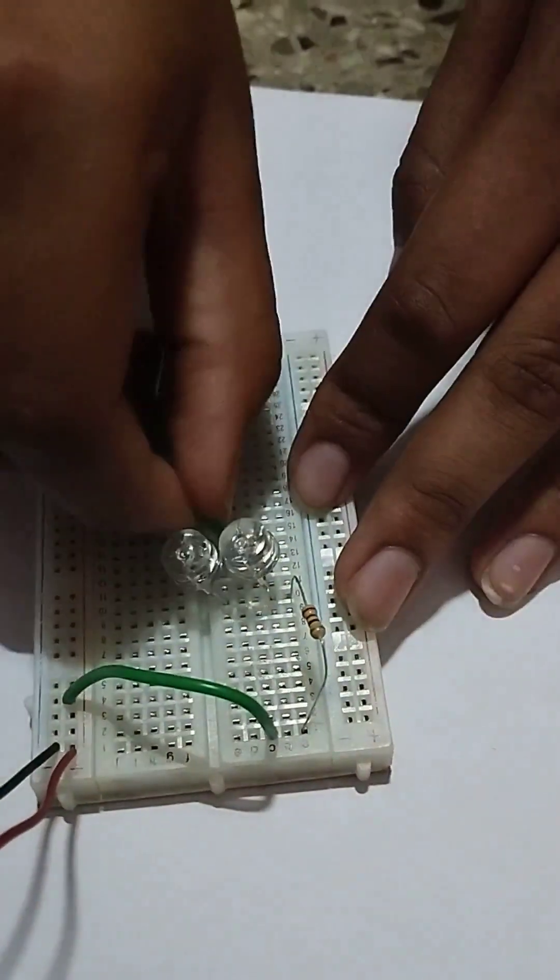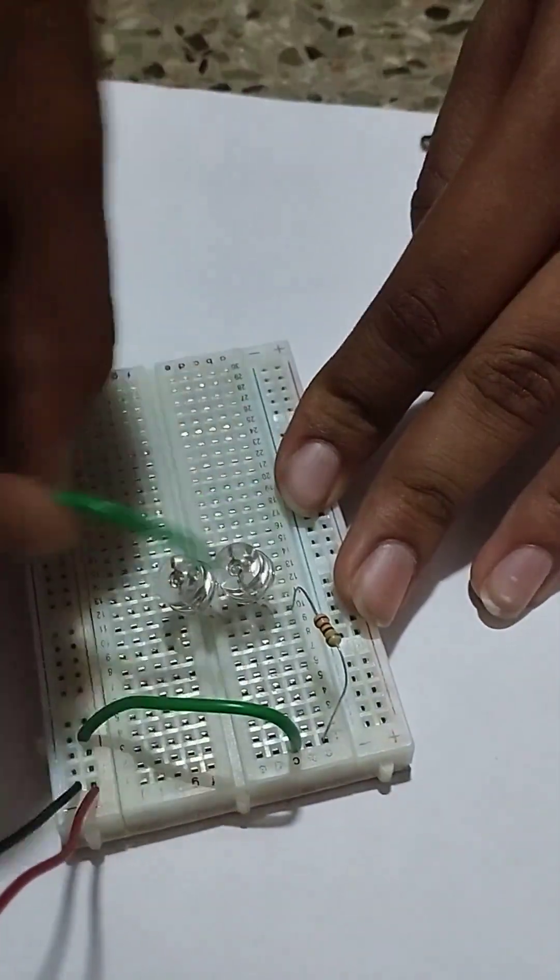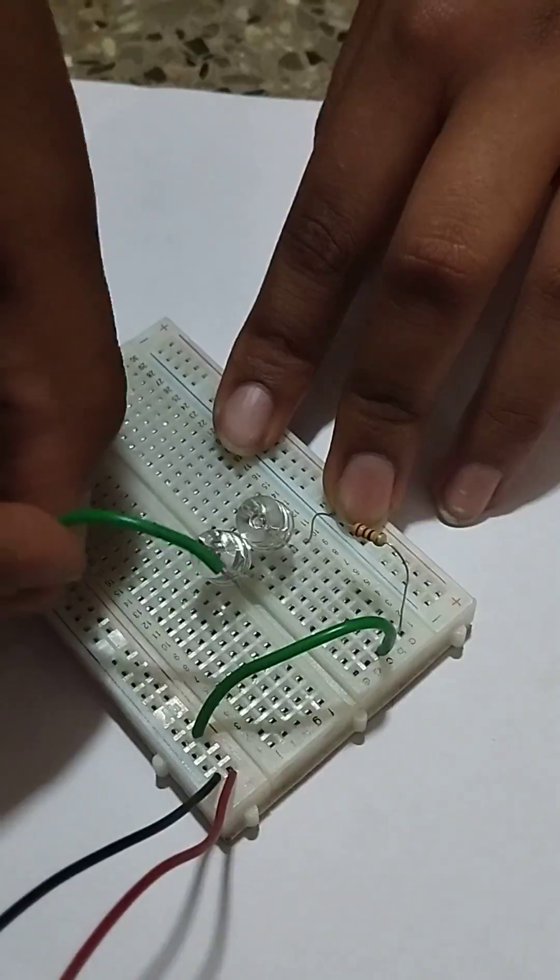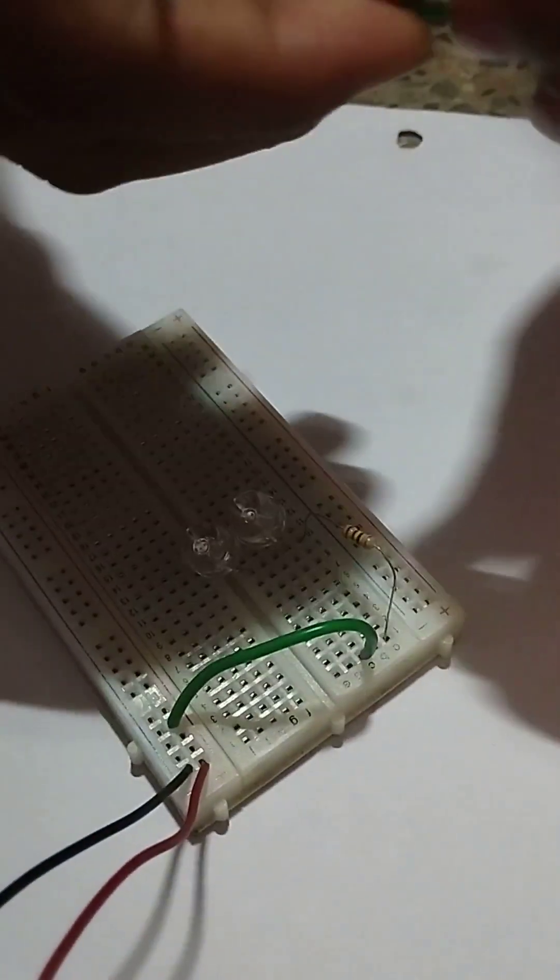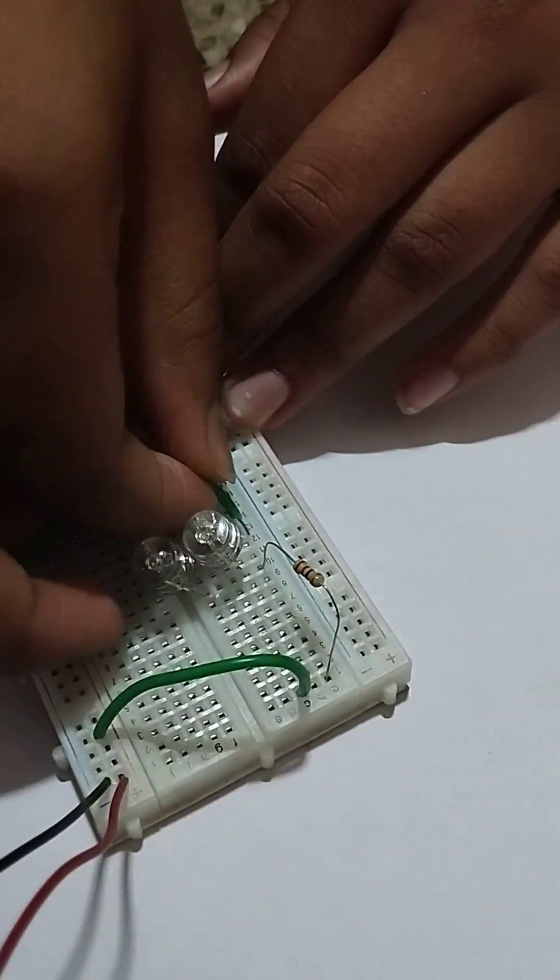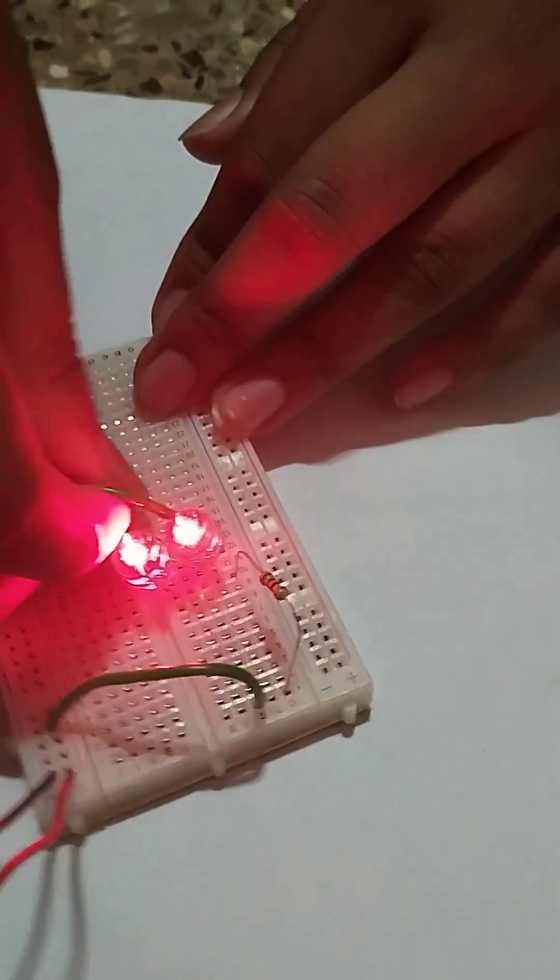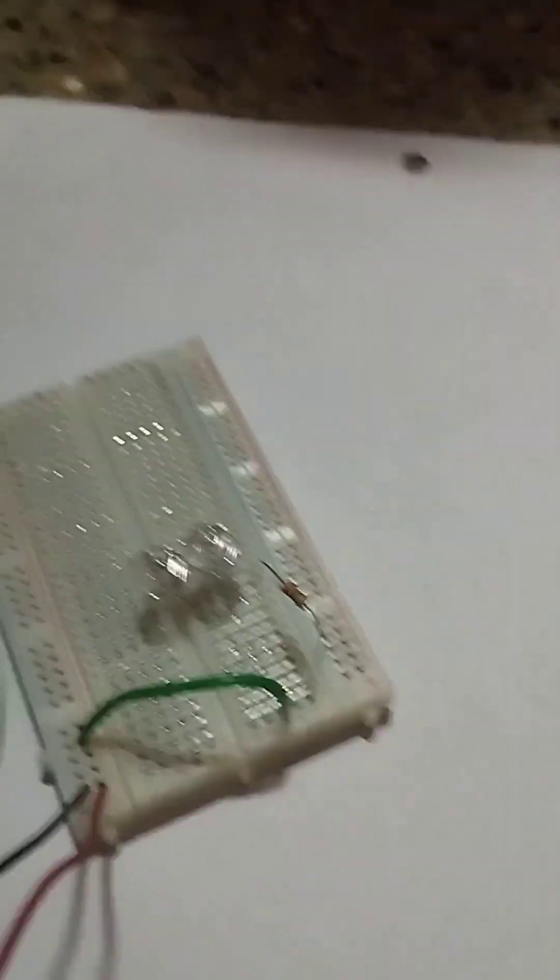Now take another wire and connect it in the 12th and connect it to the negative. Connect it over here, they glow. This is the parallel connection and the thing I showed before is the series connection. Thank you.